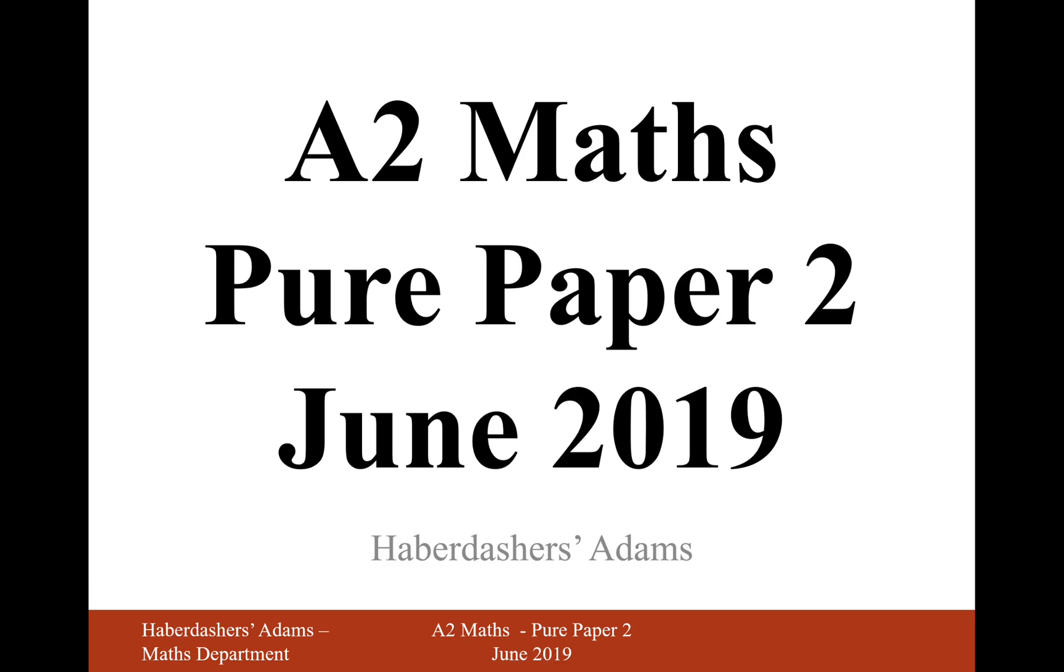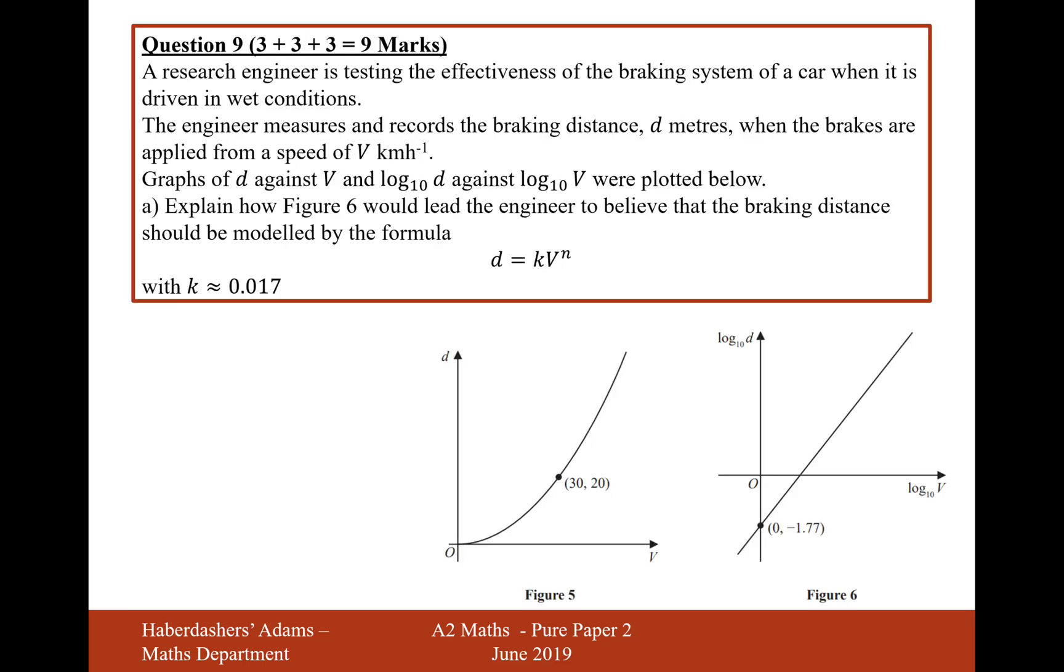Hello there and welcome to the June 2019 paper. Here we're on question 9. A researcher is testing the effectiveness of the braking system of a car when it's driven in wet conditions. The engineer measures and records the braking distance d meters when the brakes are applied from a speed of v kilometers per hour.